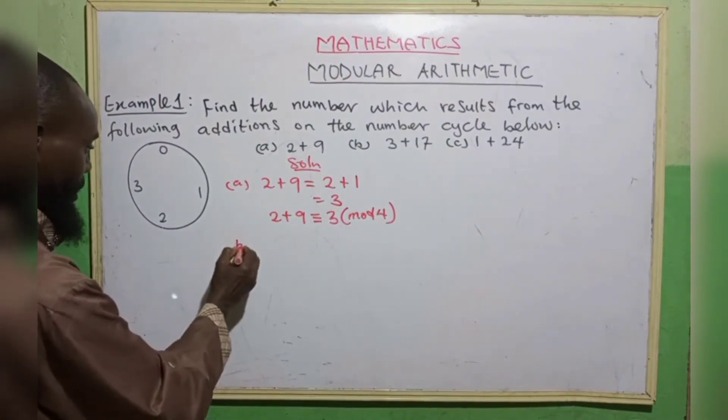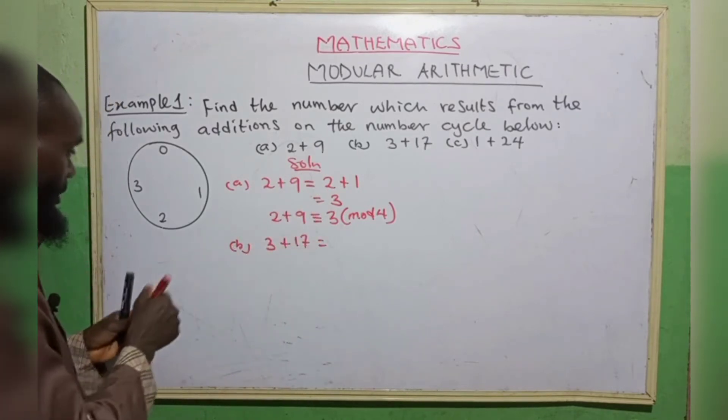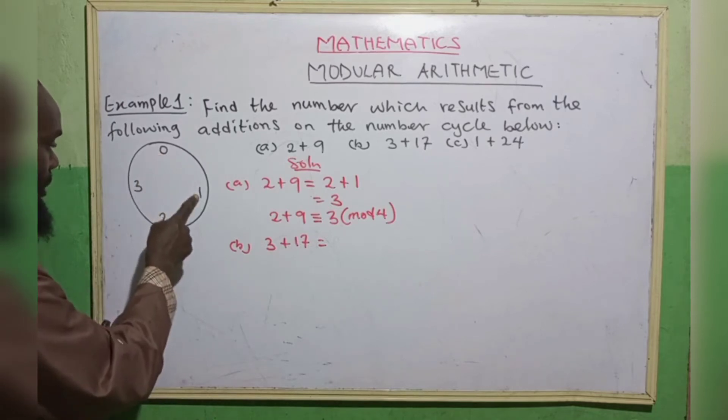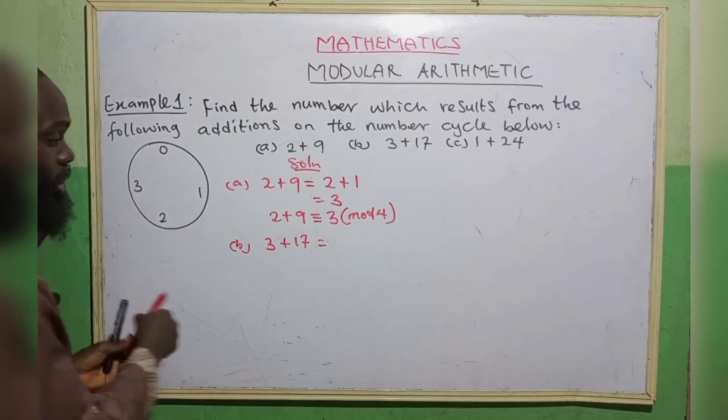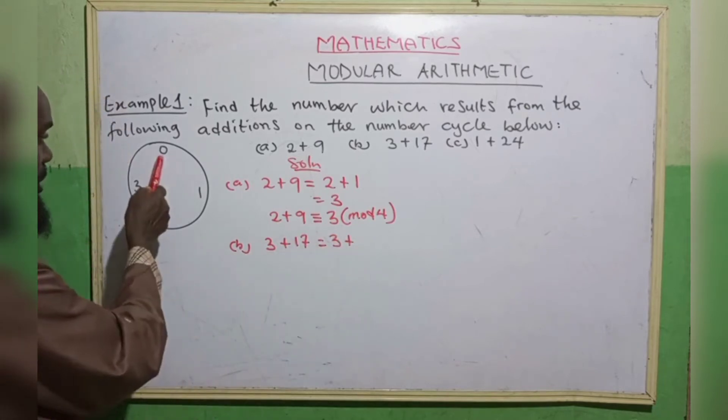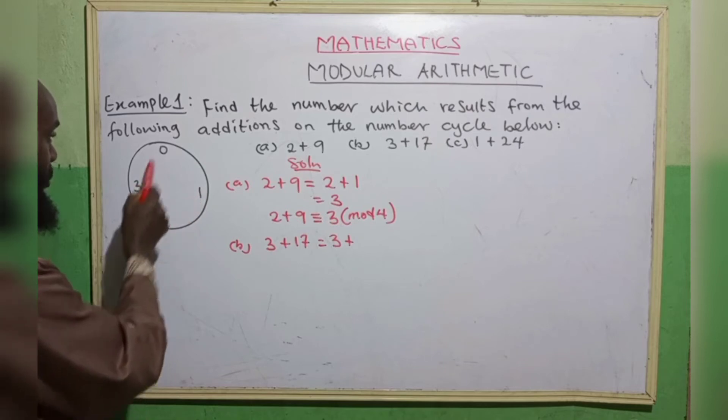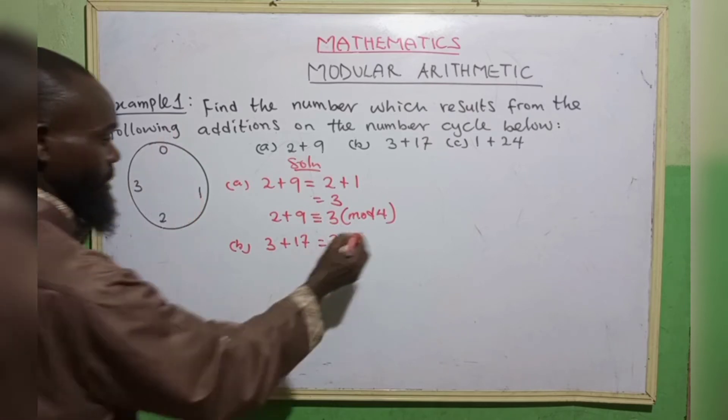Likewise b, we have 3 plus 17. 3, this is 0, 1, 2, 3. 3 is also equivalent to 3. Plus 17, 0, 1, 2, 3, 4, 5, 6, 7, 8, 9, 10, 11, 12, 13, 14, 15, 16, 17. Equivalence to 1.